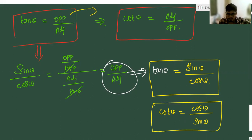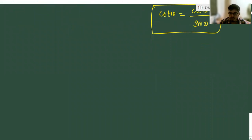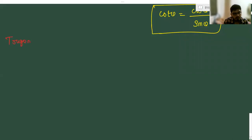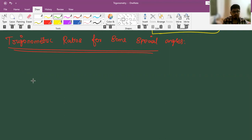These are the important trigonometric ratios. Now let us move to the next one: trigonometric ratios for some special angles. For that, consider one square.